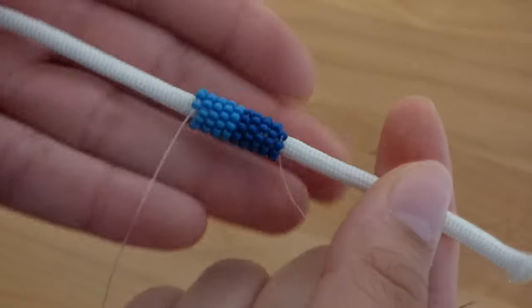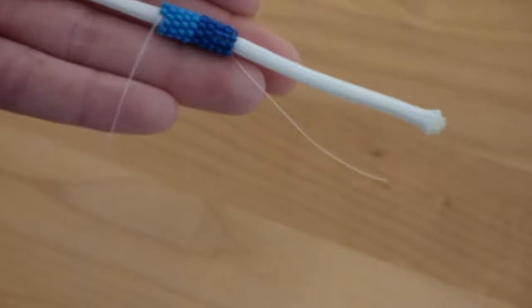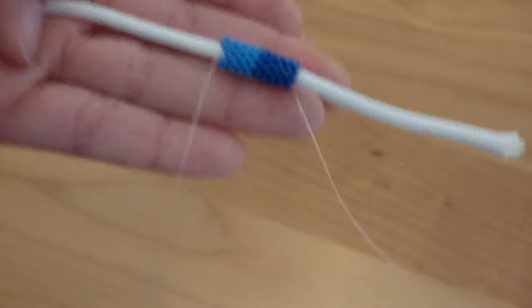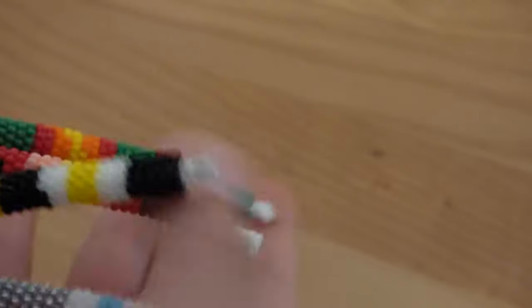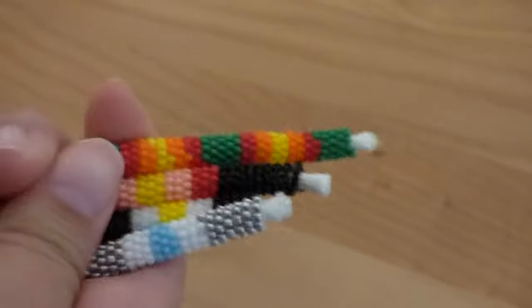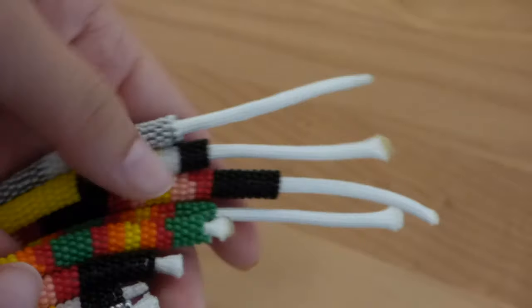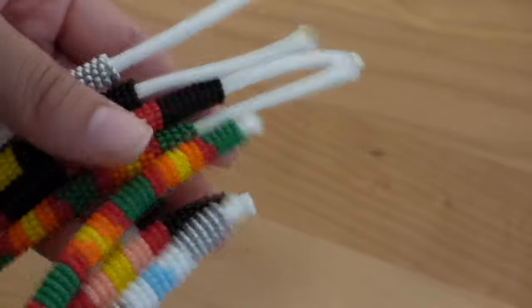So now all you have to do is repeat the same steps all the way until you get to the end of your paracord. Normally I leave a small space so that I can attach the ends. So as you can see, I have left just a small space so that you can connect it in the end.